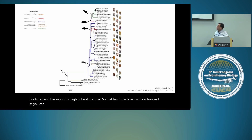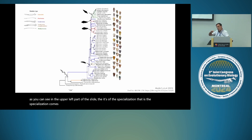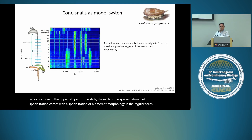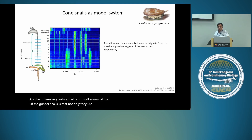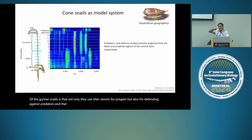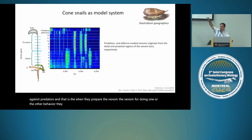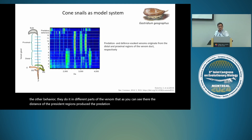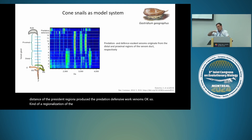Each specialization comes with a different morphology in the radular teeth. Another feature not well known is that cone snails use their venom not only for predation but also for defense against predators. When they prepare venom for one or the other behavior, they do it in different parts of the venom duct. The distal and proximal regions produce the predation and defense evoked venoms, so there is a regionalization of transcription and production of venoms within the venom duct.